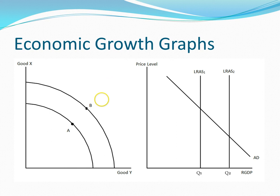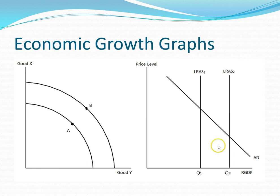These two graphs show what happens when there is economic growth in a country. The left graph shows the initial PPF, the inside point A. When the economy expands, the curve moves outward to a point previously impossible, point B, showing that the economy can now produce more goods. Similarly, the graph on the right shows the amount of output possible at full employment initially, represented by quantity 1 and long-run aggregate supply 1. However, when the economy expands, the long-run aggregate supply shifts right and the new potential output is shown by quantity 2.